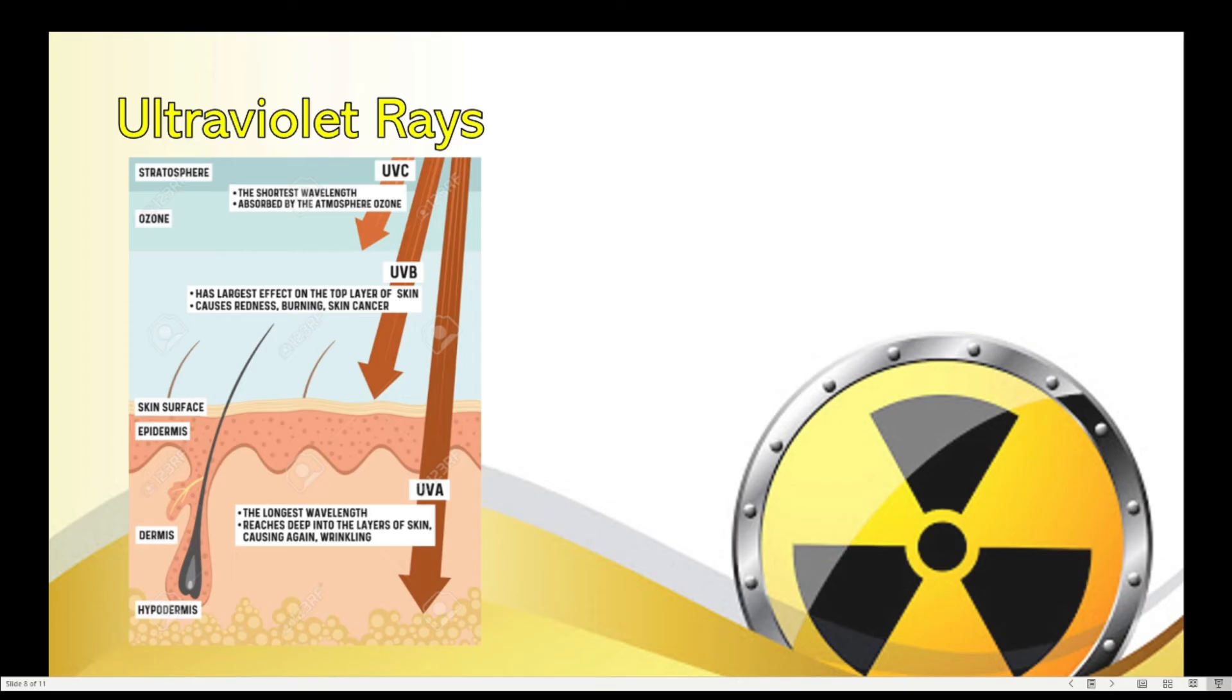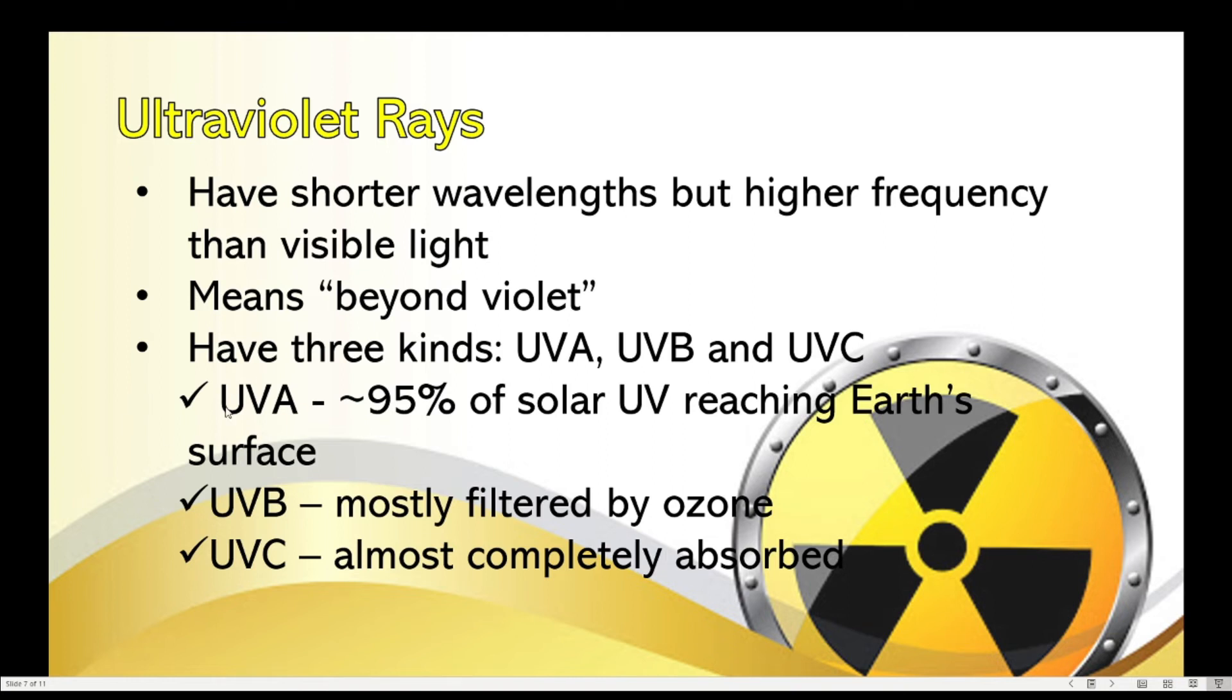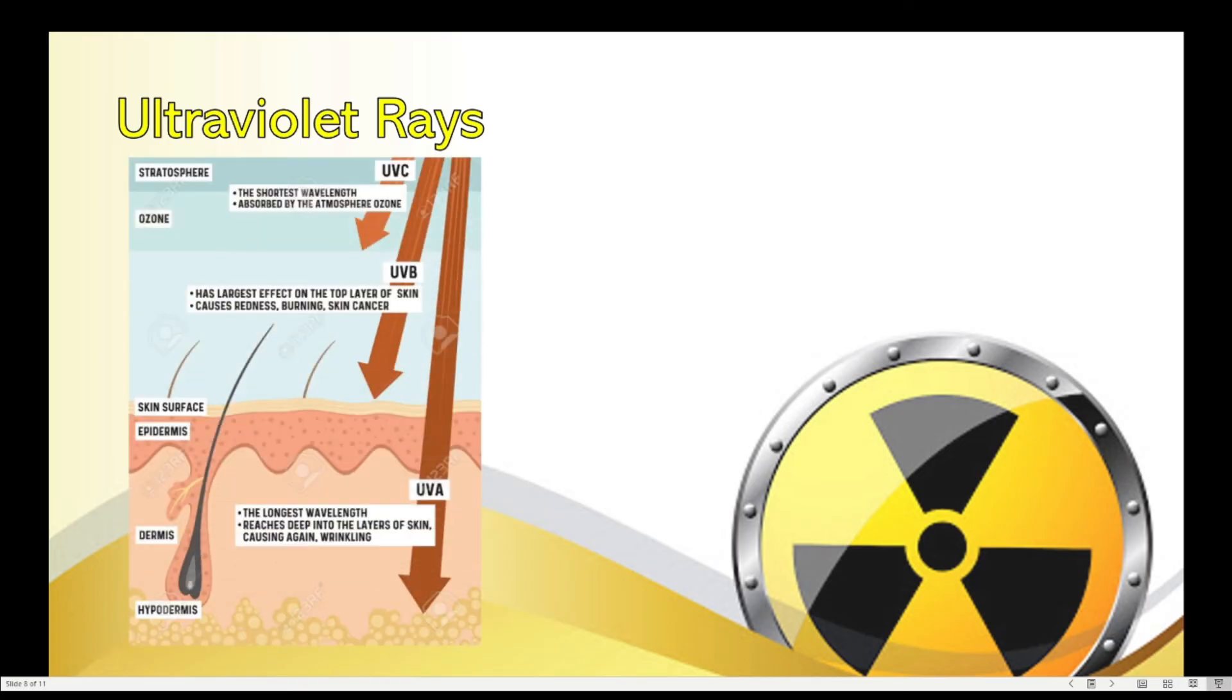So, that's also the type of ultraviolet radiation that usually causes us to tan when we're exposed to the sun. So, now, for UVB, that's almost 5% that remains because we said earlier, 95% would be UVA. The remaining 5% usually would be UVB. So, this only reaches the skin surface. However, since UVB has higher energy and frequency than UVA, it may cause skin cancer if you are overexposed.